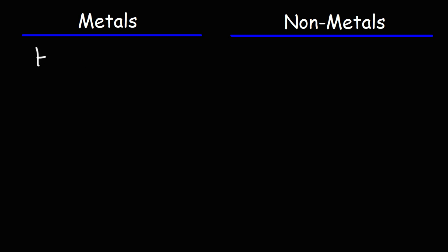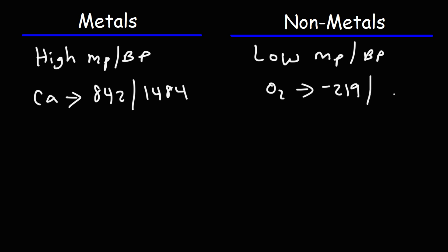Metals tend to have relatively high melting points and boiling points. Non-metals tend to have low melting and boiling points compared to metals. Calcium, for instance, has a melting point of 842 and a boiling point of 1484 degrees Celsius. Oxygen, on the other hand, has a melting point of -219 degrees Celsius and a boiling point of -183. Most non-metals tend to have low melting points and boiling points, whereas metals usually have much higher melting points and boiling points.